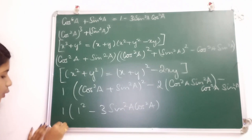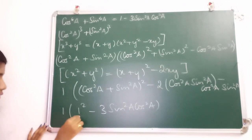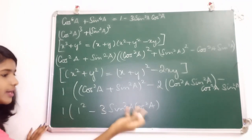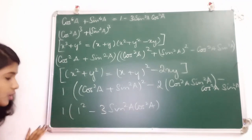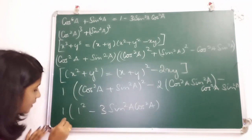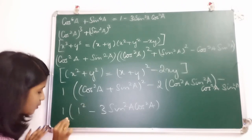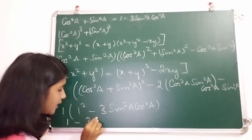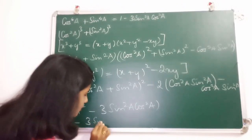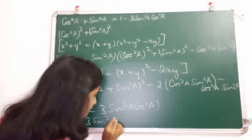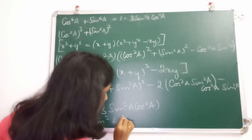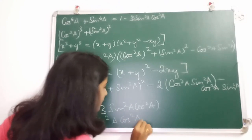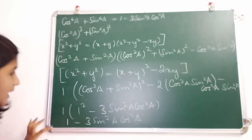Since 1 into anything is 1, and 1² is 1, we get 1 minus 3sin²A cos²A, which matches the RHS. The proof is complete.